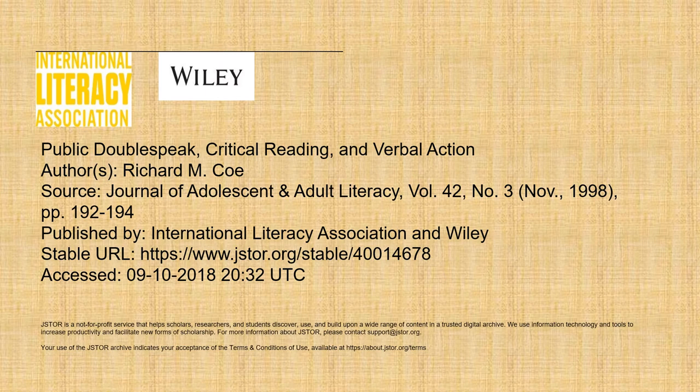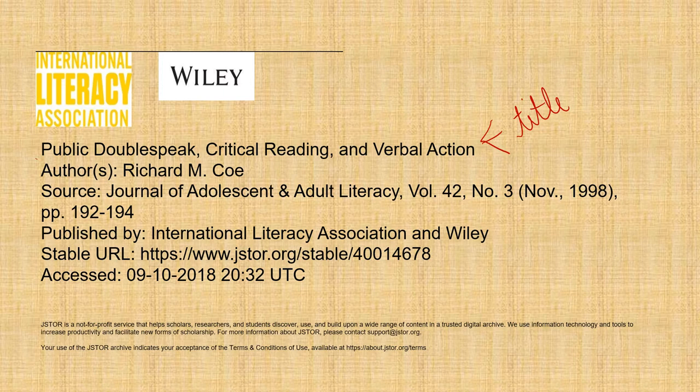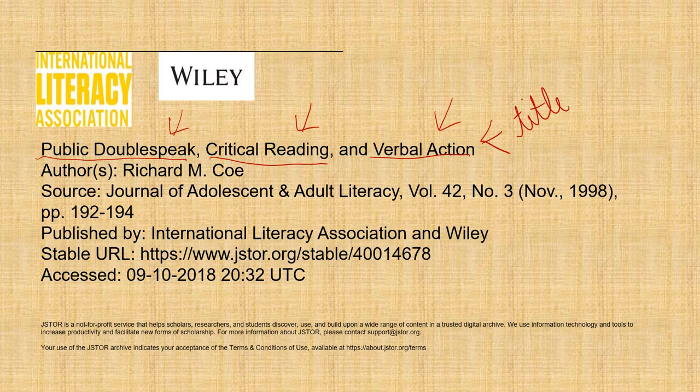This information is from the title page. The important things to note here, especially number one, is the title. The title should tell you something, so that's a good place to start. We have three parts to this title. The first part is 'public doublespeak,' the second part is 'critical reading,' and the third part is 'verbal action.' If a title is good, it should set you up for what to expect when you read an article.